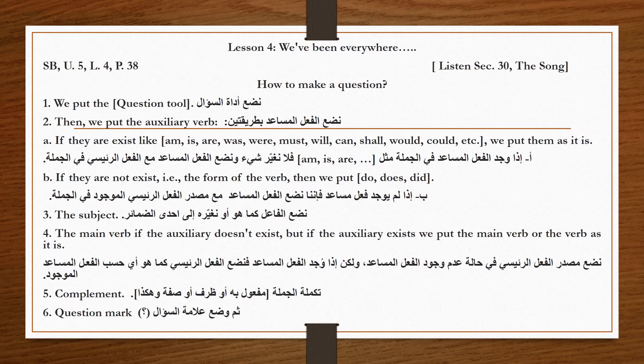If there is a third-person 's' we remove it, and if the verb is in the past tense we remove the past tense from the sentence. Number three: the subject — نضع الفاعل كما هو أو نغيره إلى أحد الضمائر. For example, Ibrahim becomes 'he' and Nadia becomes 'she.'